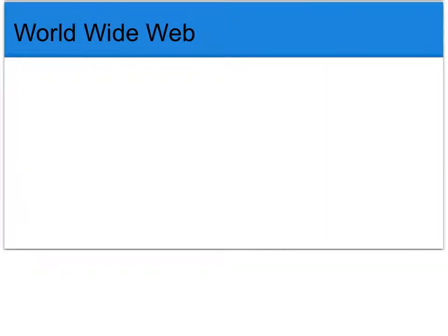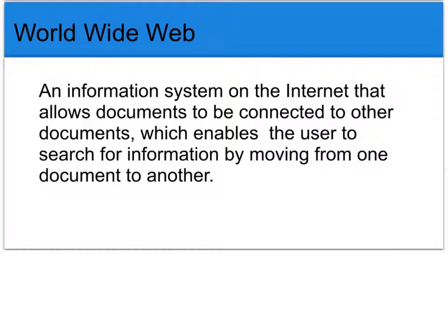The next thing we're going to talk about is the World Wide Web. It is an information system on the Internet that allows documents to be connected to other documents, and it enables the user to search for information by moving from one document to another. When you type in an Internet address, you would put www in front of it, and then the address for the document or website that you're trying to access.